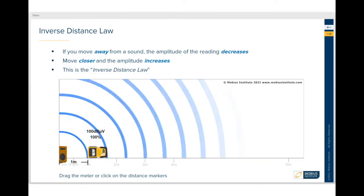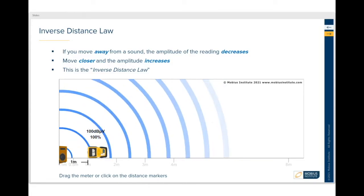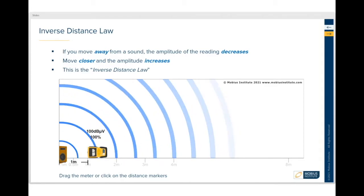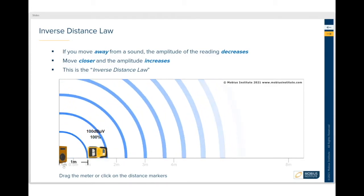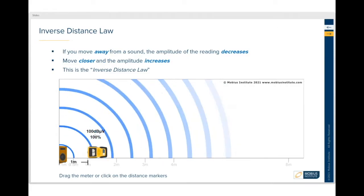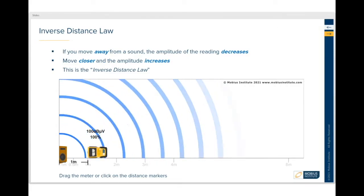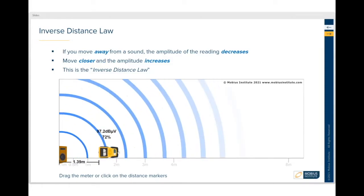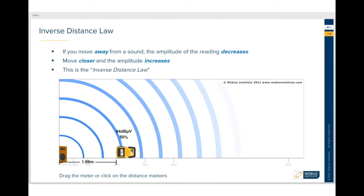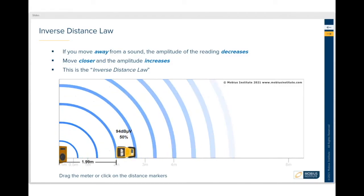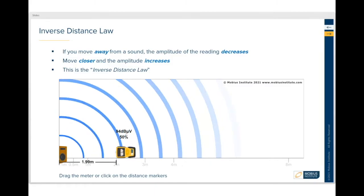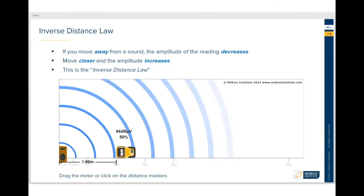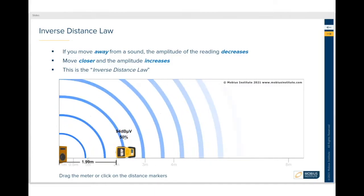Here I have my handy Mobius ultrasound tool that's set one meter from my sound source, my ultrasound source, and you can see the amplitude. As a ratio we're calling that 100%. As I move it out to two meters, you can see the dB value has changed by 6 dB. The value, if we're looking at microvolts, is now half.